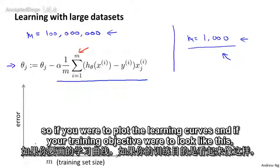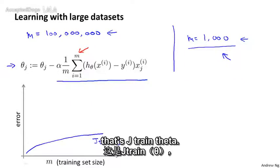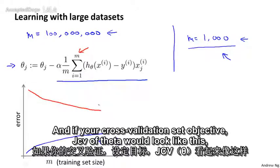So if you were to plot the learning curves and if your training objective were to look like this, that's j train theta,